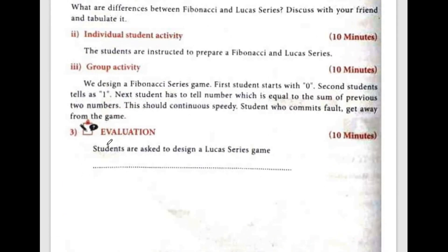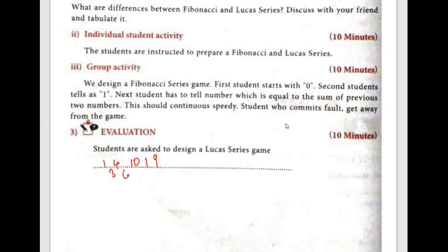Day 4: Students are asked to design a Lucas series game. The Lucas series goes: 1, 4, 10, 19... The differences between terms are 3, 6, 9 — following the 3 times table — so this is a separate series known as the Lucas series. Continuing: 19 plus 12 is 31, and so on.